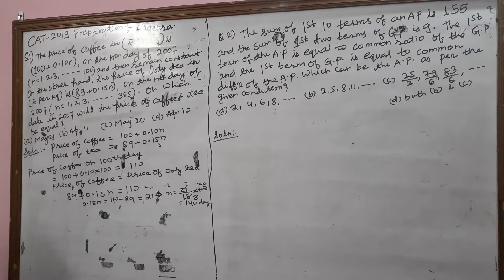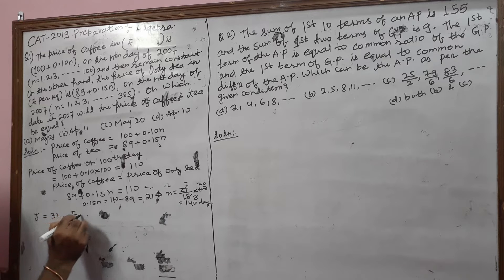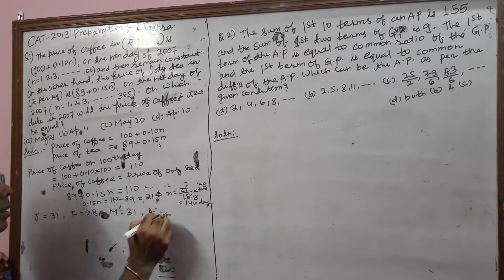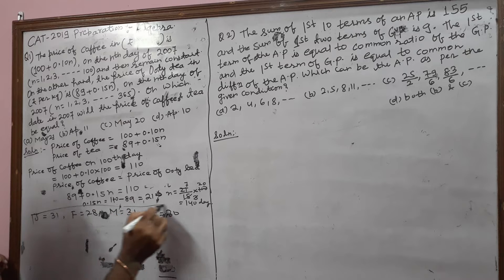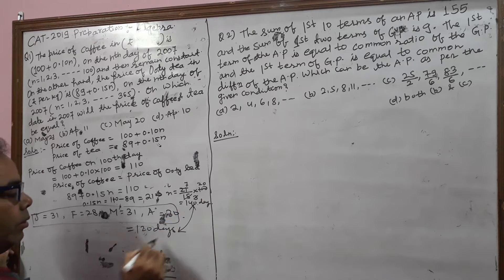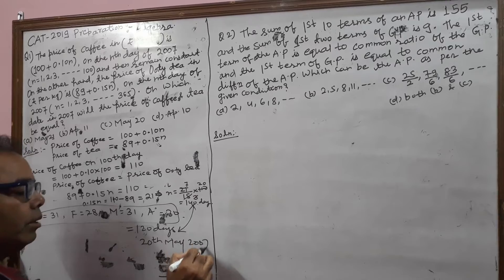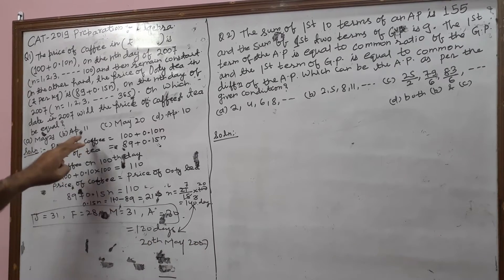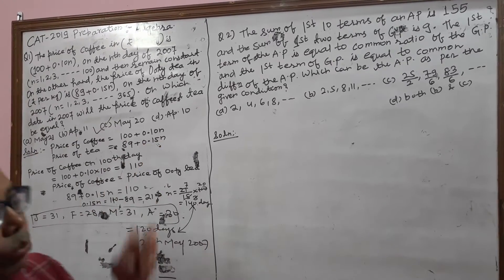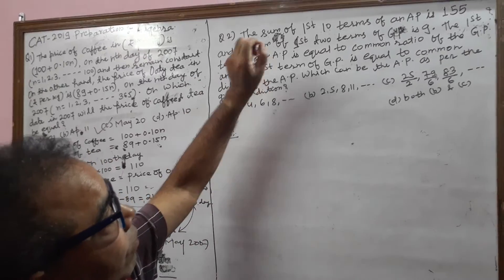2007 is an ordinary year, not a leap year. January has 31 days, February has 28 days, March has 31 days, and April has 30 days. Adding all these values gives 120 days. The difference is 20 days, so the answer is 20th May 2007 — the day when the price of tea and coffee are equal. Option C is the answer.